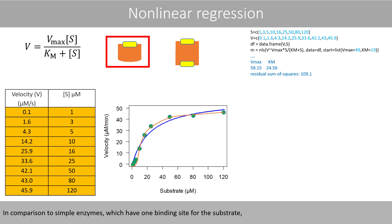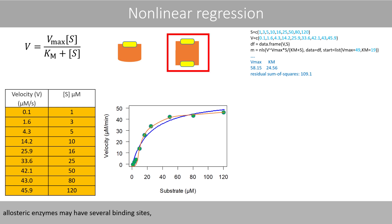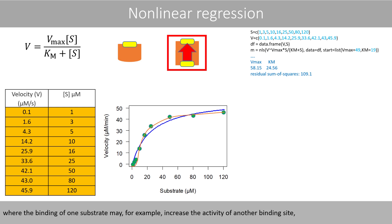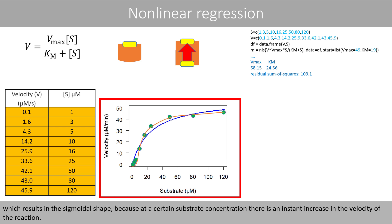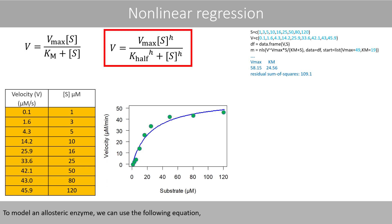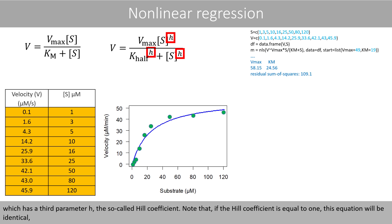The sigmoidal shape is the typical shape obtained from an allosteric enzyme. In comparison to simple enzymes, which have only one binding site for the substrate, allosteric enzymes may have several binding sites, where the binding of one substrate may increase the activity of another binding site, which results in the sigmoidal shape, because at a certain substrate concentration there is an instant increase in the velocity of the reaction.